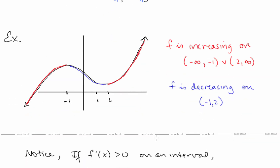For example, this graph here is increasing on negative infinity to negative 1, union 2 to infinity. Those are the x intervals on which the graph is increasing. And f is decreasing on negative 1 to 2 — that's the x interval on which the graph is decreasing.